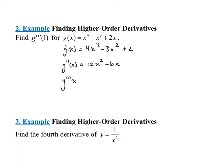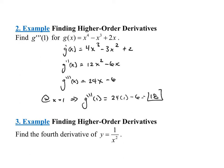We can finally find the third derivative. The derivative of 12x squared would be 12 times 2, which is 24x, and then minus 6 times 1, which is just minus 6. So now we just need to evaluate at x equals 1. So g triple prime evaluated at 1 would be 24 times 1 minus 6, which is 18. Please double check my math, but that should be the third derivative evaluated at x equals 1.